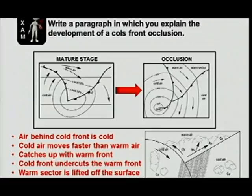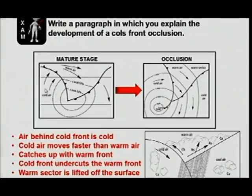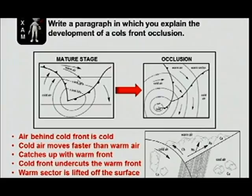Here we have the mature stage. In the mature stage, the air behind the cold front is cold. Here we have the cold air, here we have the warm air, and the cold air is moving towards the warm air. What's very important is that the cold air is moving much faster than the warm air. As it moves faster, it drags the cold front along, and the cold front starts to catch up, moving closer and closer towards the warm front, eventually catching up with it.